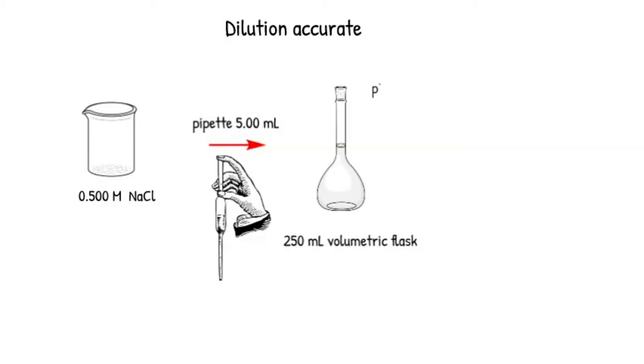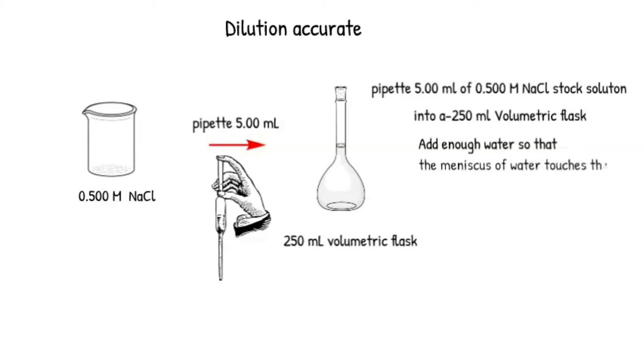The 5.00 mL solution in the pipette is then transferred to a 250 mL volumetric flask. Water is then added to the volumetric flask until the meniscus of water is lined up or touches the measuring line on the volumetric flask. The technique that follows is what we do in the lab.